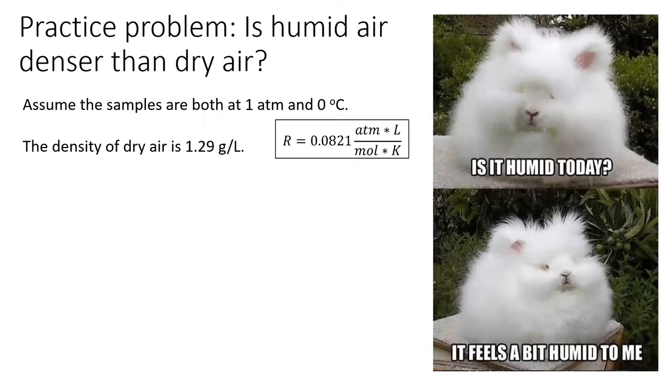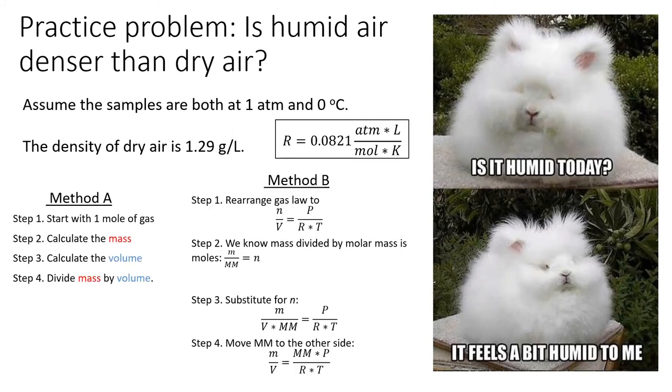Time for a practice. Try to figure out which is more dense, dry air or humid air. To solve this, you'll want to pick your favorite method from the previous two and calculate the density of water vapor, then compare that to the density of dry air, which is 1.29 grams per liter. I'll put methods A and B on the screen, and you can pick your favorite.